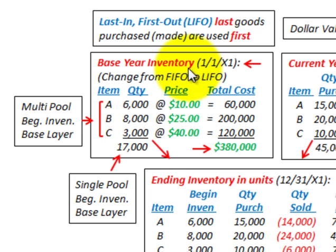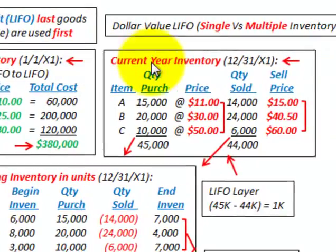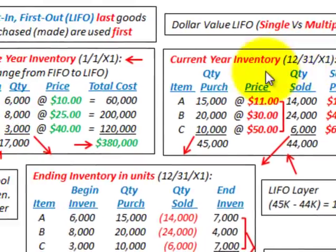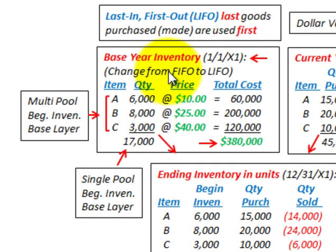For our example here, we're just going to be looking at the basic differences. Our base year would be the beginning of the year, January 1st. And our end of the year would be December 31st. In either case, we're going to have these base year inventory items — let's say they're different models or products that we're selling.